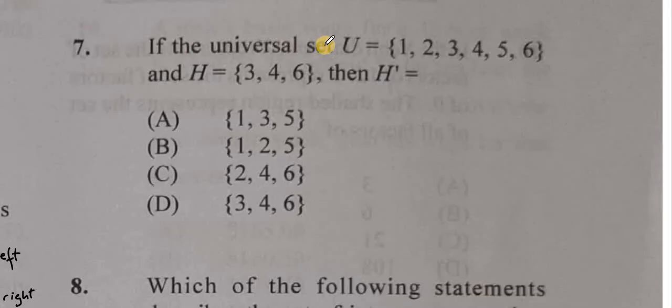Question 7. If the universal set U is equal to the set of numbers 1, 2, 3, 4, 5, and 6,